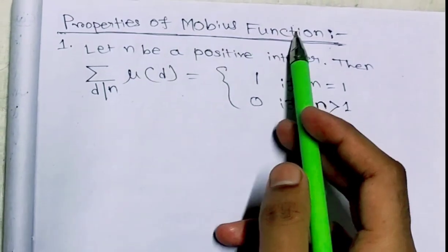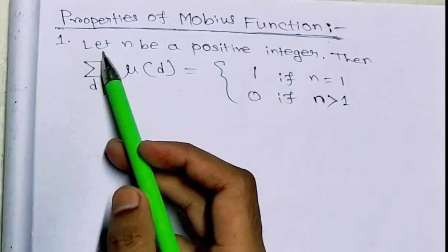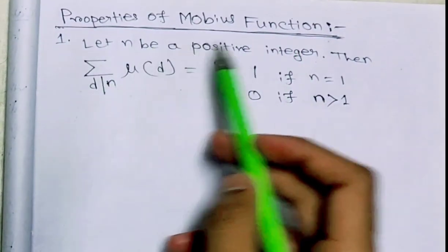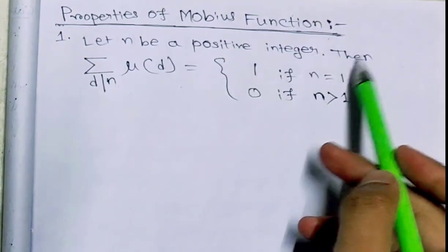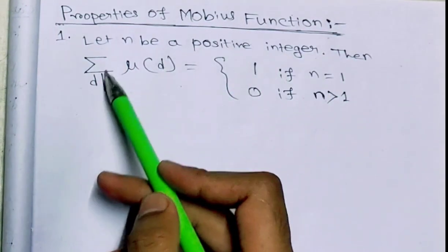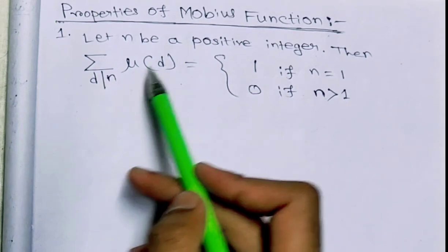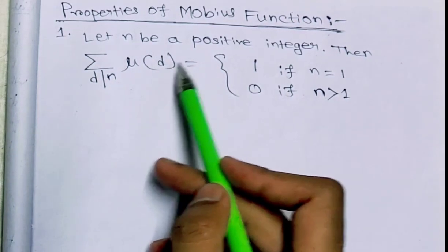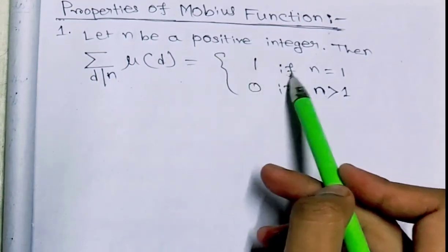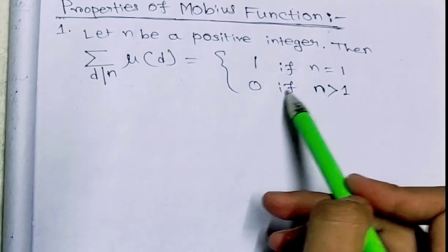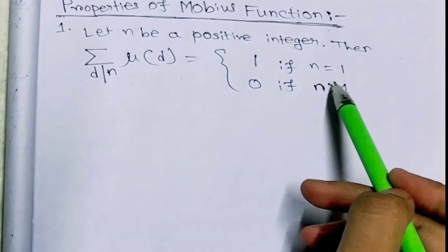Property of the Möbius function — first property. Let n be a positive integer. We have to show that the summation over d dividing n of μ(d) equals 1 if n equals 1, and 0 if n is greater than 1.